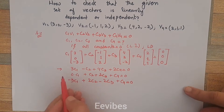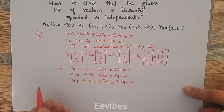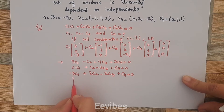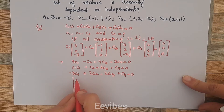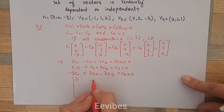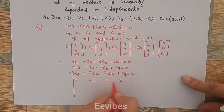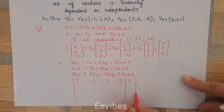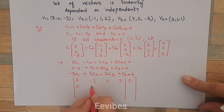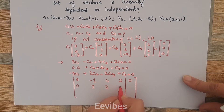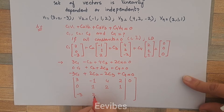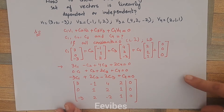Once you are done writing the system of linear equations, you solve it by applying the Gauss elimination method. For that, write the system in the form of an augmented matrix: the first row is [3, -1, 4, 2 | 0], the second row is [0, 1, 2, 1 | 0], and the third row is [-3, 2, -2, 1 | 0]. This is a homogeneous system so the right-hand side is all zeros.